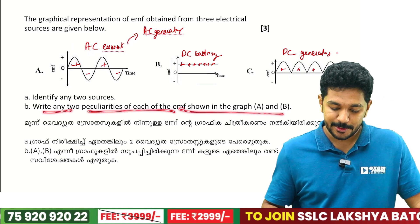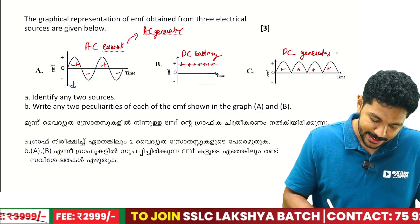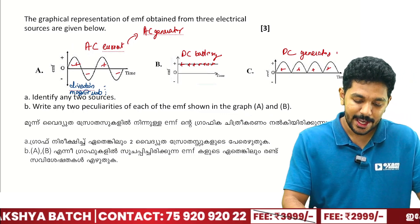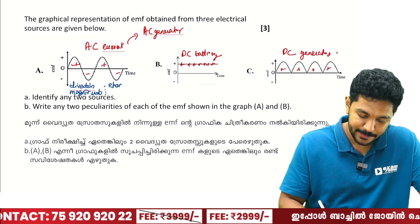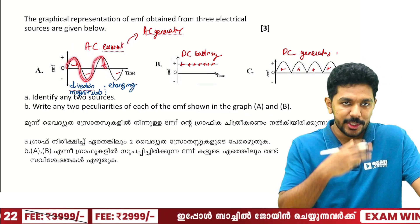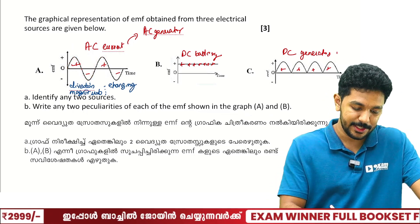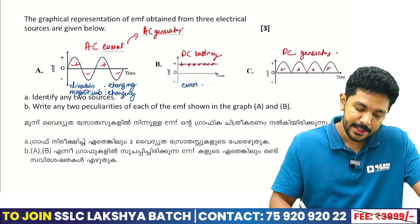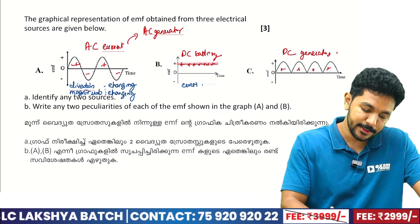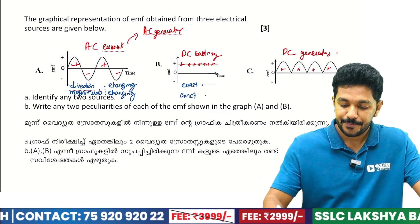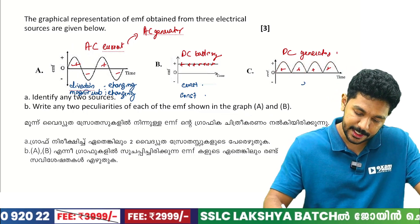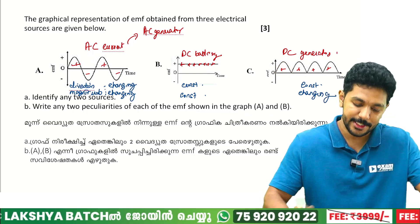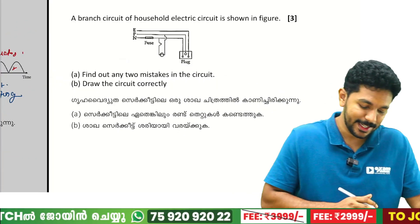Write the peculiarities of each EMF shown in the figure. For AC generator: direction is changing and magnitude is changing. For DC battery: direction is constant and magnitude is constant (e.g., 2V). For DC generator: direction is constant but magnitude is changing (e.g., varying between 0 and 3V). So we get 3 marks for this answer.